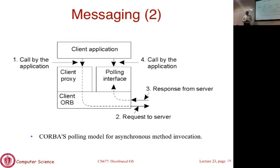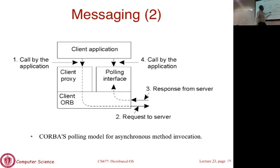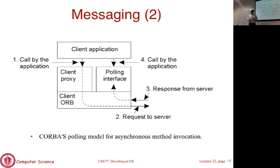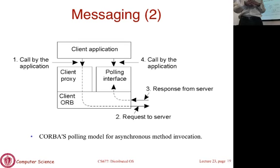CORBA also supports a polling-based model. You send the request, continue execution, and periodically poll asking 'has the reply come back?' The ORB stores the reply for you, and when you poll after the reply has arrived it delivers the result to you. So you can either have the system notify you via callback, or keep polling until the response arrives. This flexibility is great but also increases complexity, which is part of why CORBA never took off — there's a big learning curve.